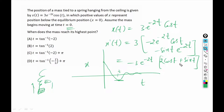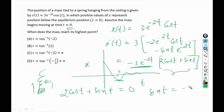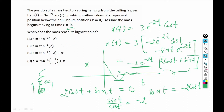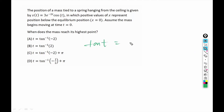Now if we put x'(t) equal to 0, the exponential term cannot be 0, so the bracket term has to be 0. So 2cos(t) + sin(t) = 0. That means sin(t) = minus 2cos(t). And sin(t) over cos(t) = minus 2. Then tan(t) = minus 2. So finally t = arctan(−2) + πn, where n is an integer.